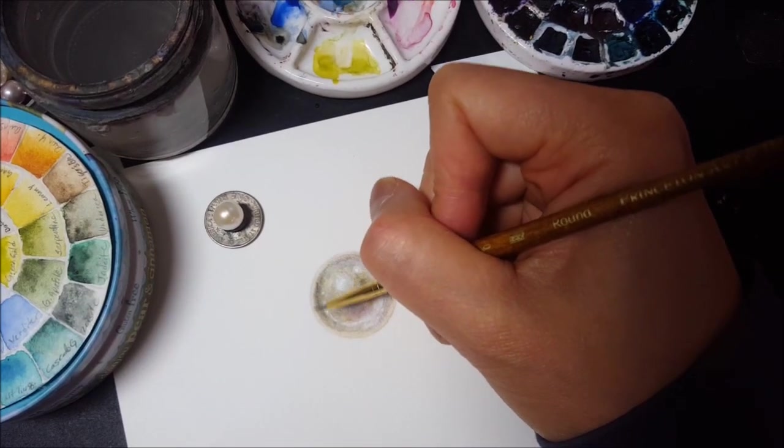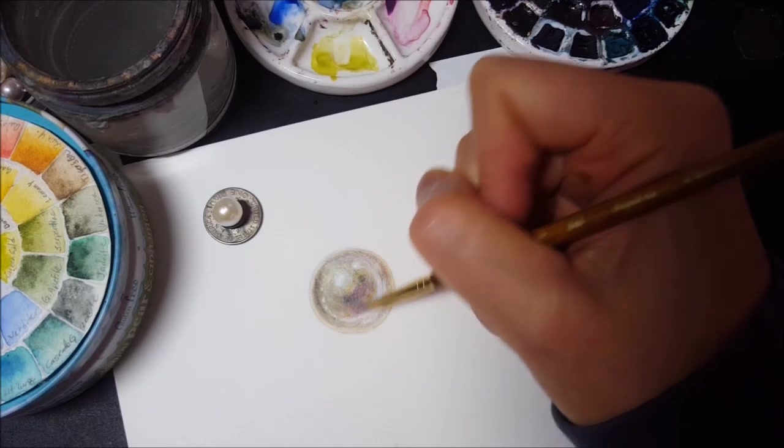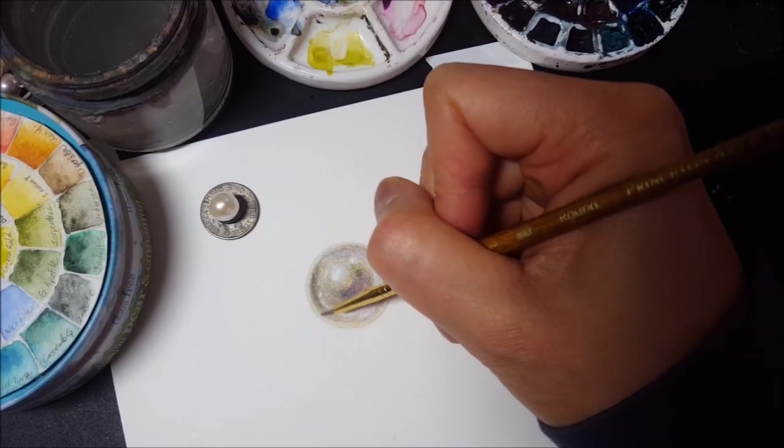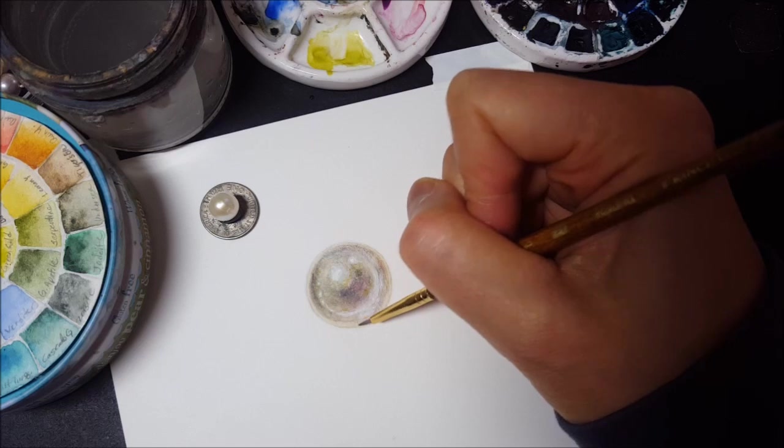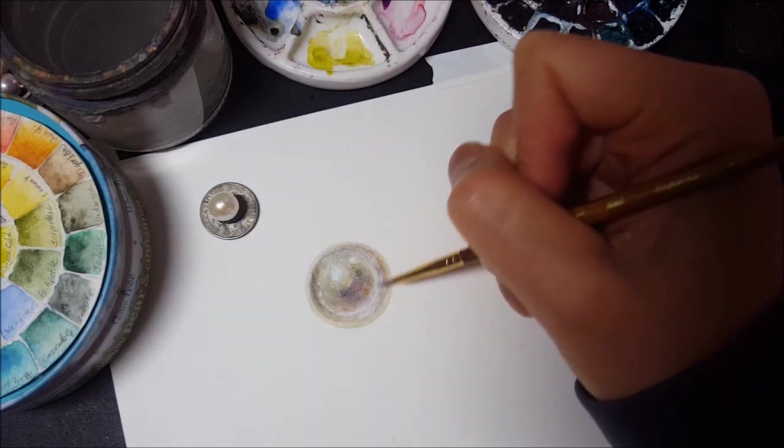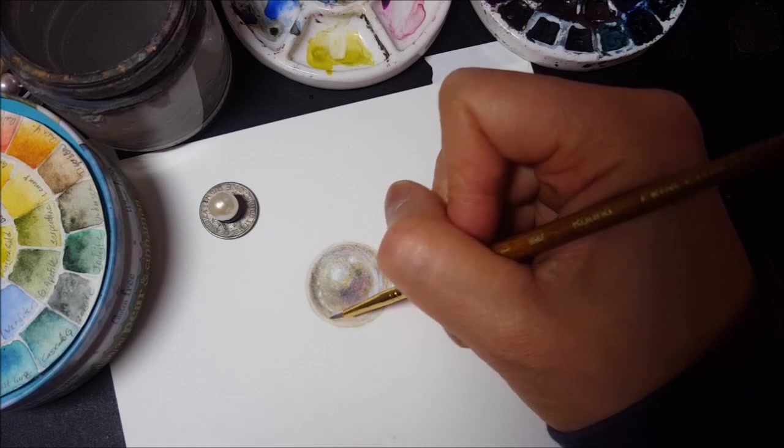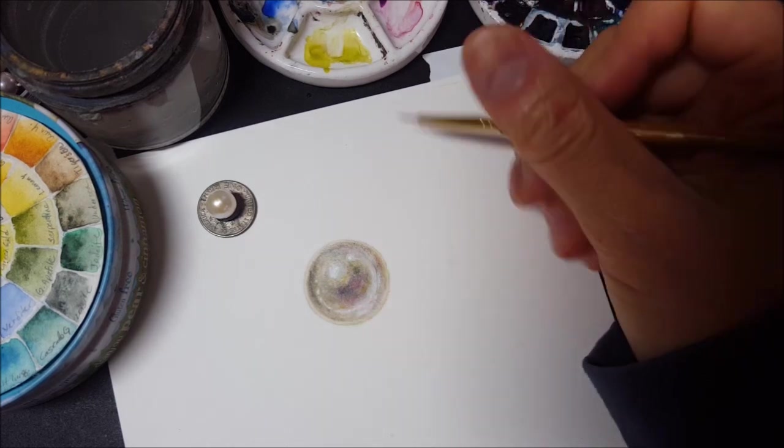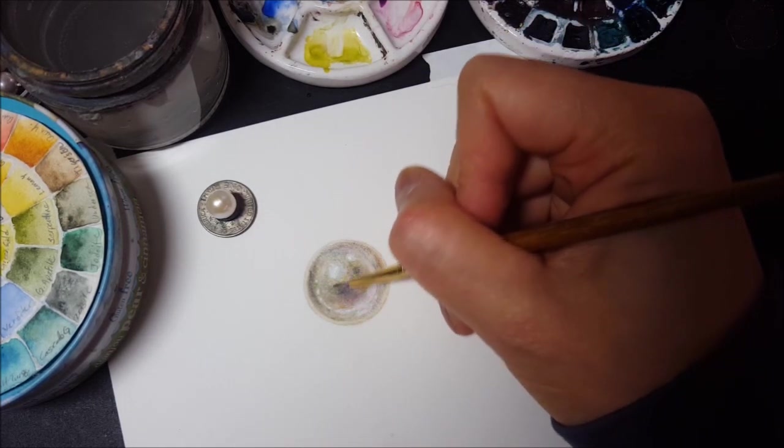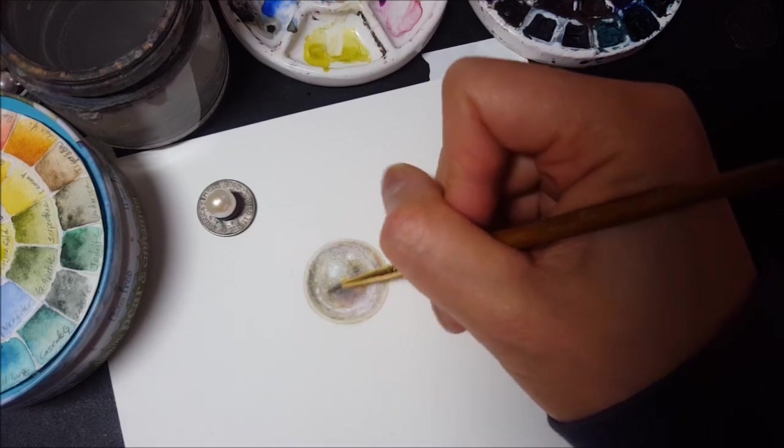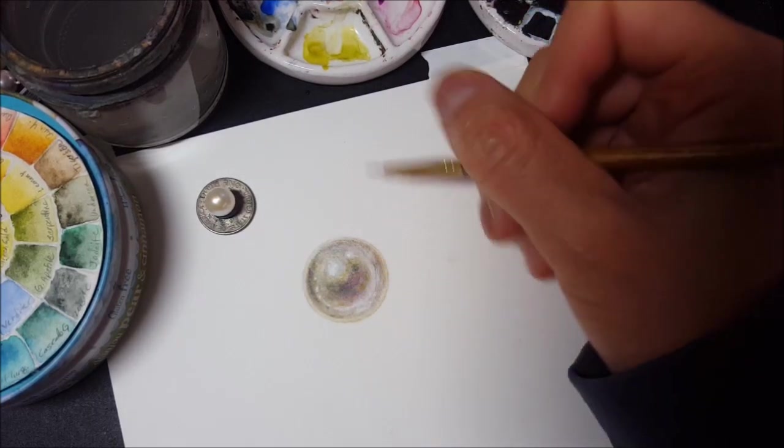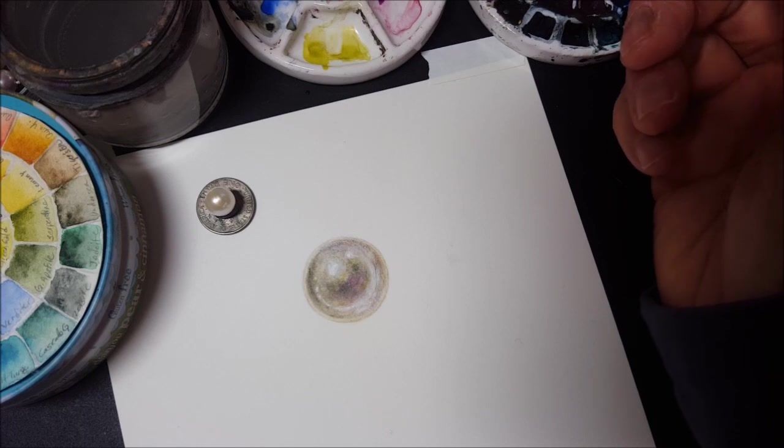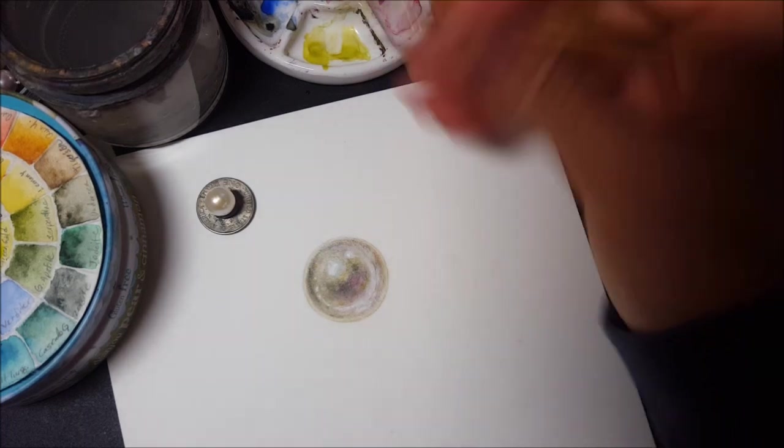Getting a little bit more along the edges to further define this round shape. Of course, if I was painting this within a setting, then this would not simply be such a just a darker edge, but the surrounding background color.